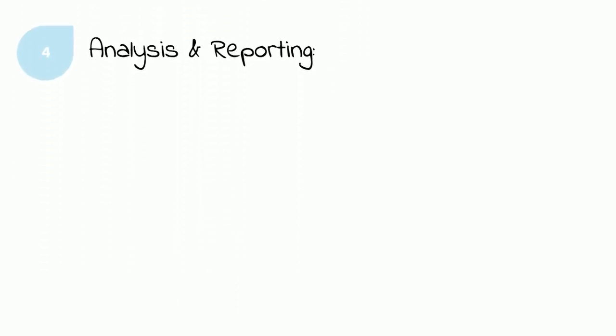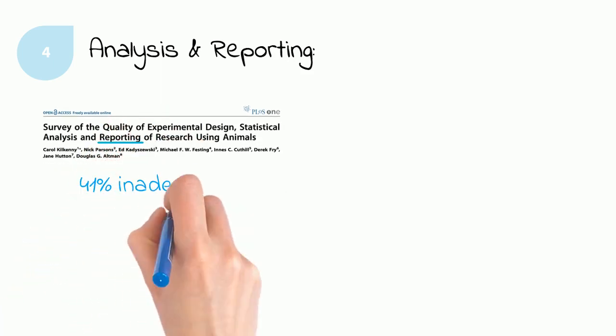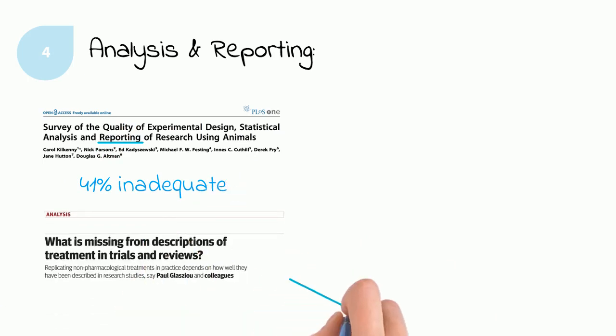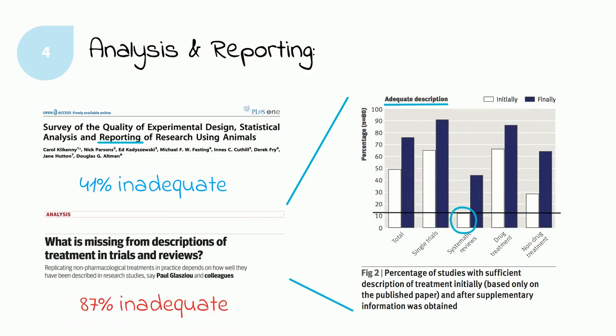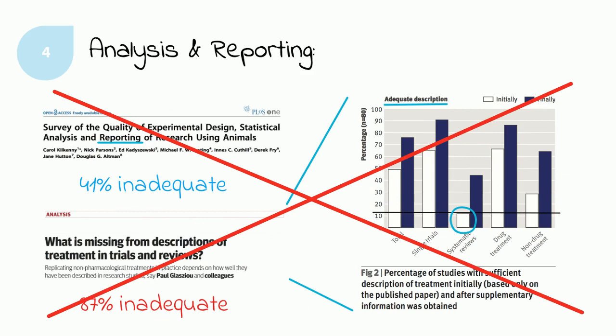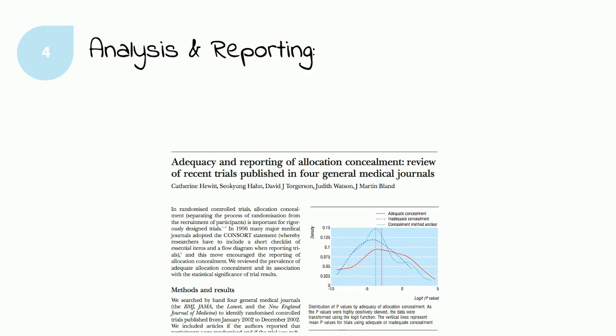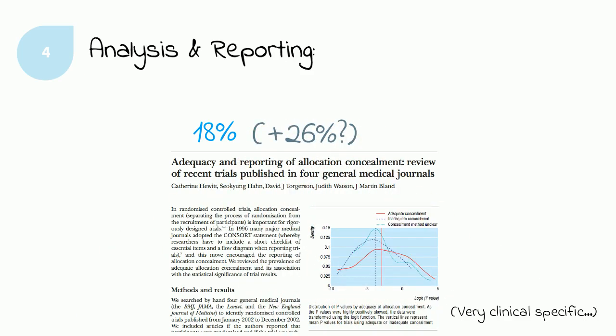Lastly, for data analysis and reporting, one major study on preclinical research had found inadequate reporting in as many as 41% of papers assessed, while others had misreporting rates as high as 87%. However, the authors decided to go with data from a 2002 study of clinical trials on the adequacy and reporting of allocation concealment — a technique used specifically in clinical trials to ensure that no one, patients or study personnel, could figure out which patients were assigned to which treatment group. This study found that 18% of clinical trials from that year had failed to do this appropriately, while 26% were unclear. So the authors chose 18% as their conservative lower-end estimate for errors in data analysis and reporting in preclinical research, and also took this number for their high estimate.